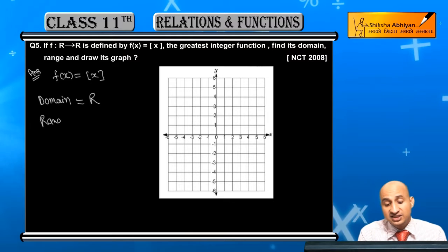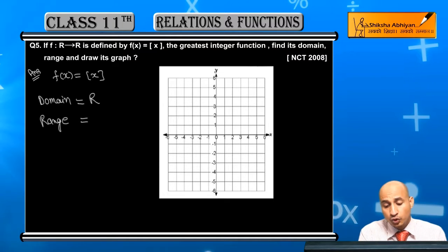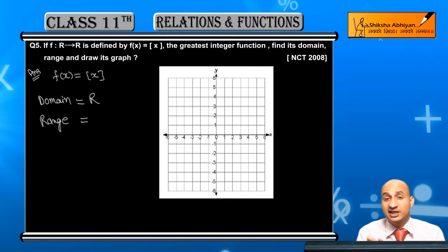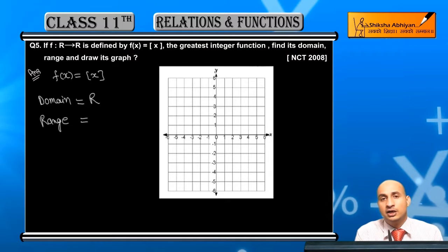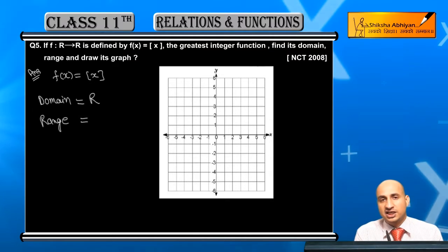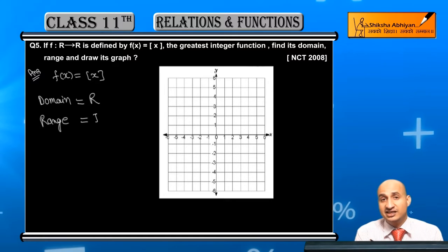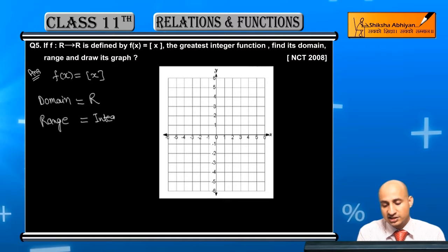But the range, because there will be real numbers, the real number's nearest place and the integer which is written. So this means the range is the integers. So here, range is integers.